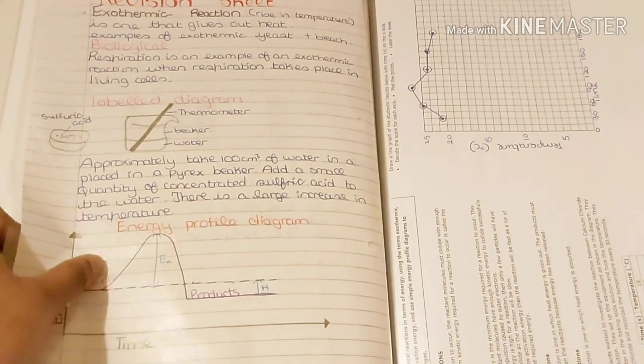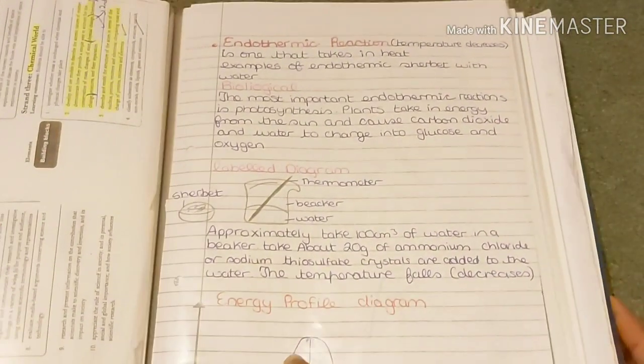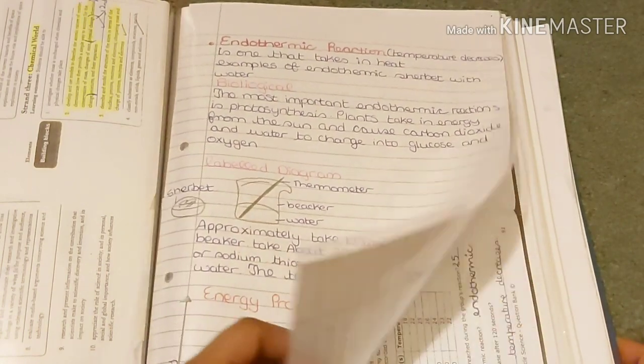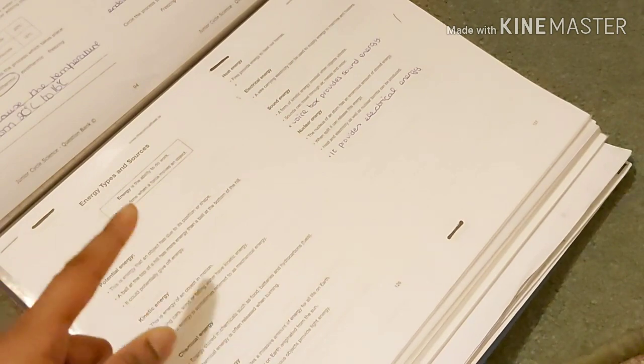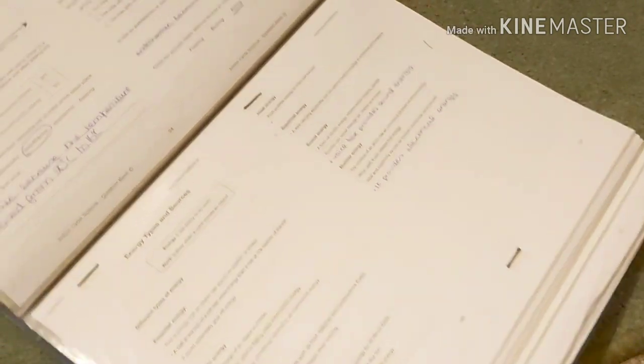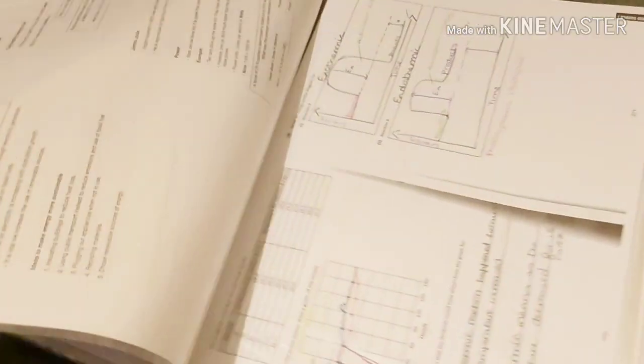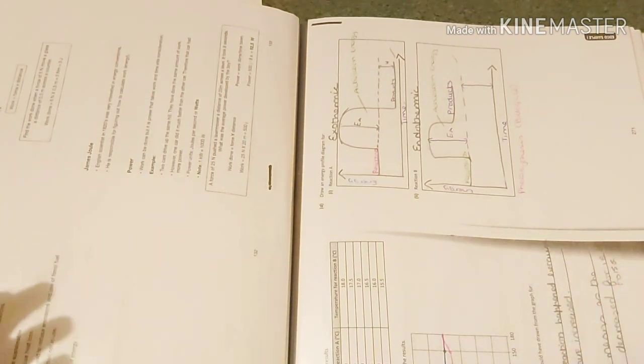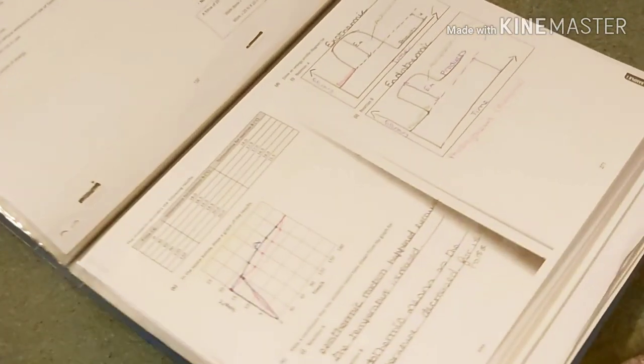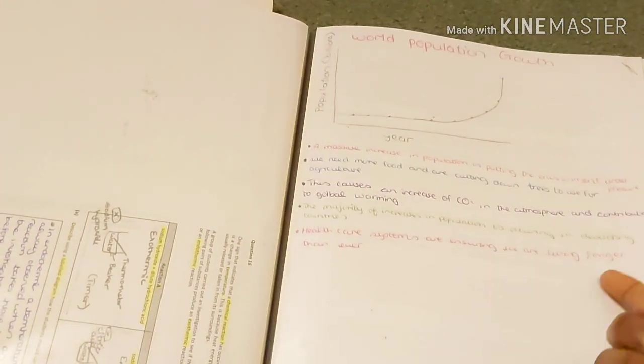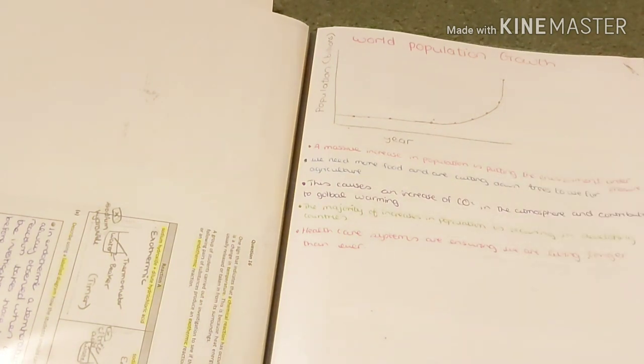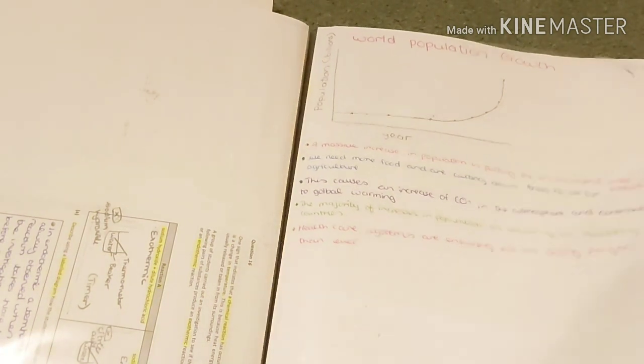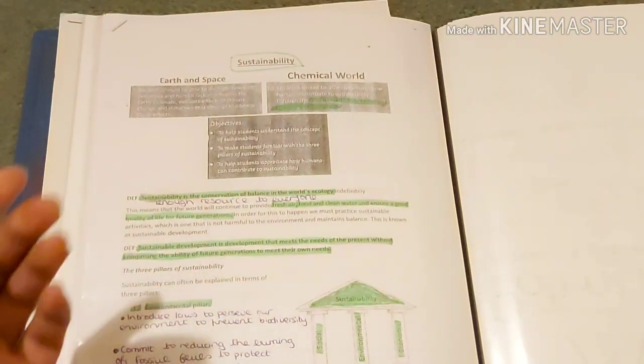It's on exothermic and endothermic reactions. That's basically the energy diagram profile thing. Exothermic and endothermic - you may all see the diagrams, the two diagrams. That's the world population growth. Sustainability.